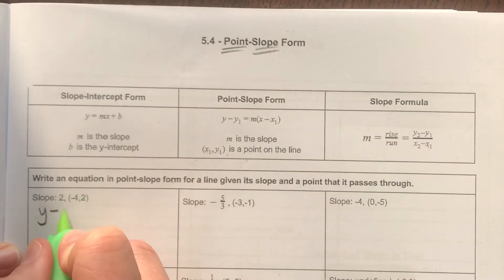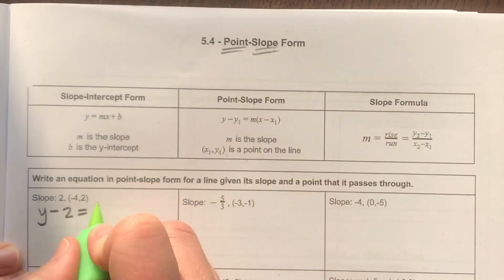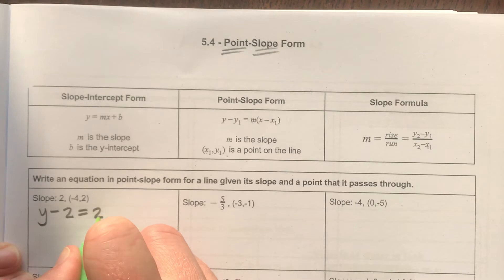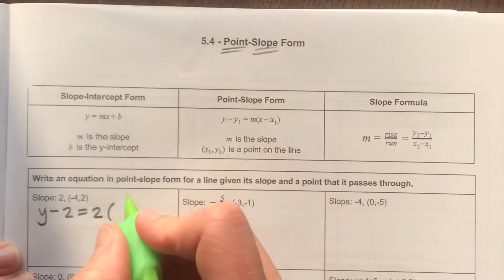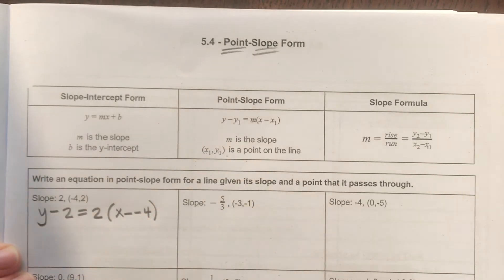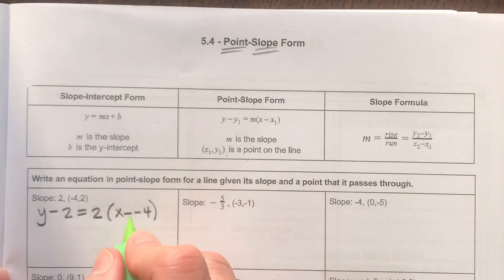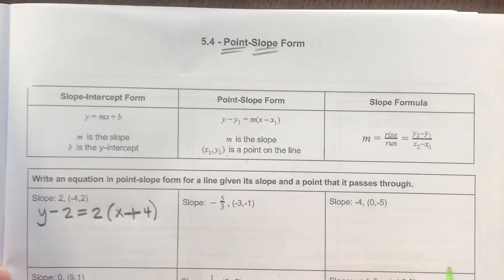a y-value of 2, that's going to go here because that's our y-value of our point. And then my slope is the letter m, so 2, my slope. And then in parentheses, x minus our x-value or x minus negative 4. Now, in order to simplify this just a little bit, all I would need to do is say that subtracting a negative is the same as adding.